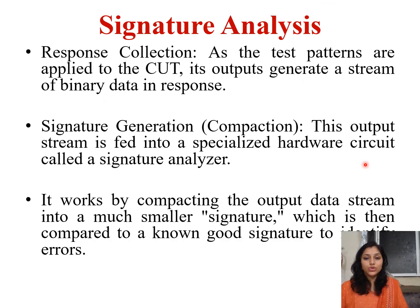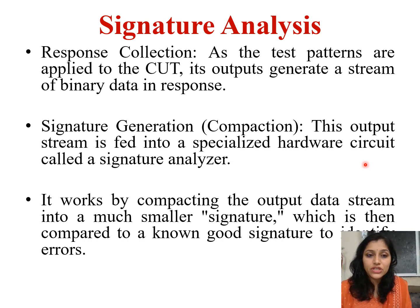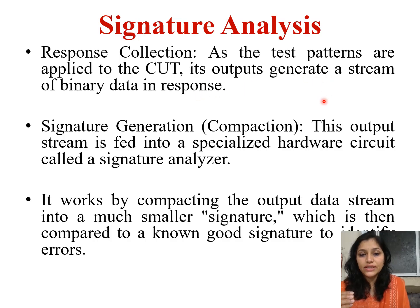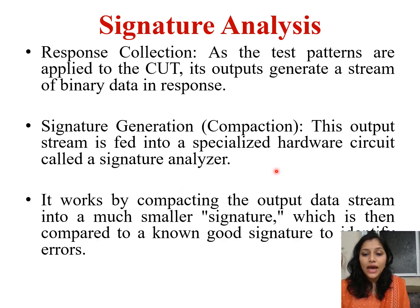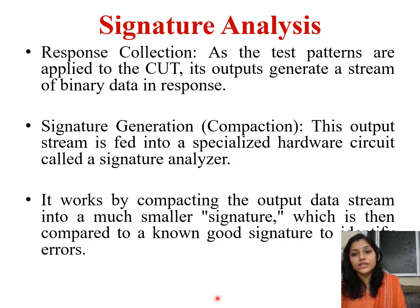Signature analysis: after applying inputs, the circuit generates some output. The first step is response collection — as test patterns are applied to the circuit, the outputs generate a stream of binary data in response. Then comes signature generation or compaction — this output stream is fed into a specialized hardware circuit called the signature analyzer. It compacts that response into a much smaller signature, and then this reduced signature is compared with the already-stored signature, and based on that, faults are detected.